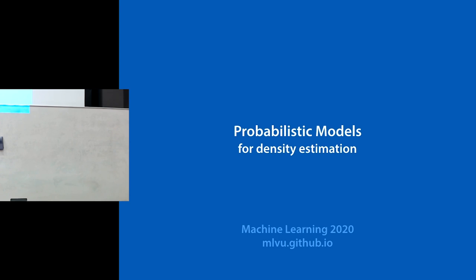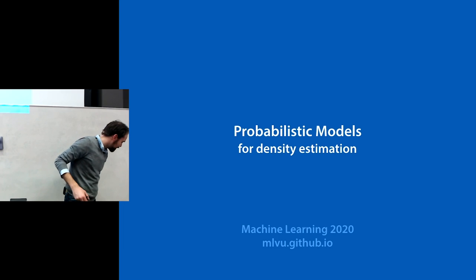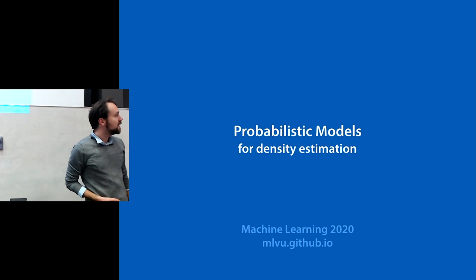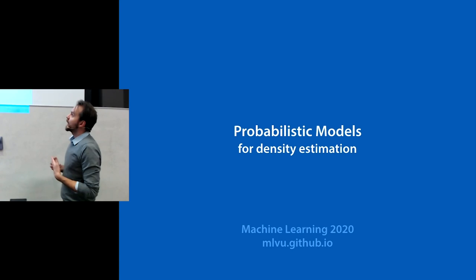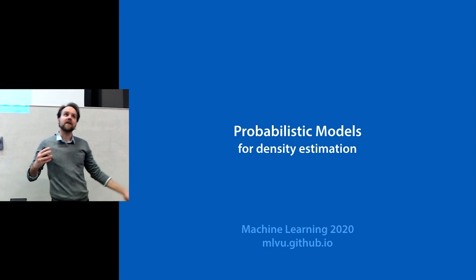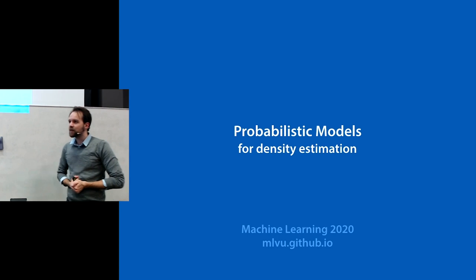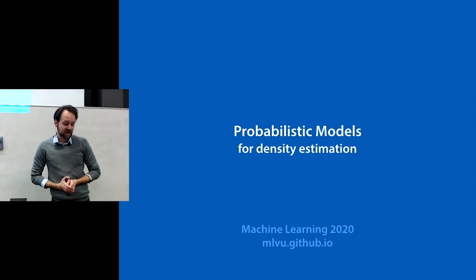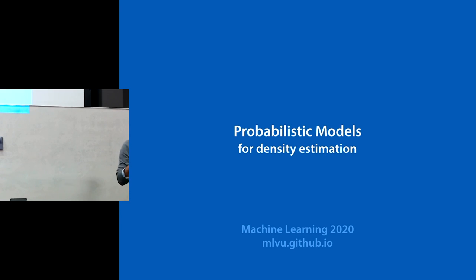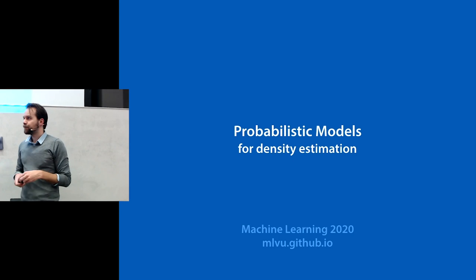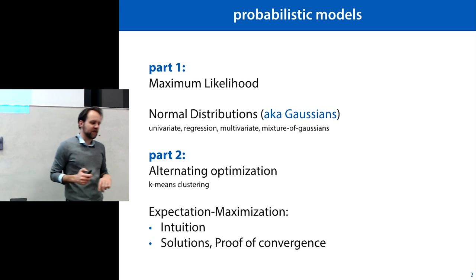Today's topic is probabilistic models, so we're turning to probability. We saw probability in the context of classification already. Today we are going to look at probability for density estimation. We are looking at unsupervised machine learning, possibly for the first time in the lecture series. We assume we have some data but no labels; we just want to model the probability distribution behind that data.